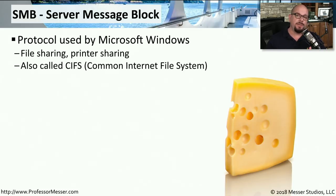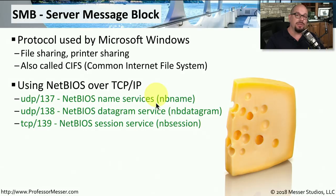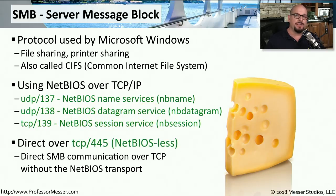Microsoft Windows doesn't use FTP to transfer files from one system to another. Instead, it uses its own format called Server Message Block. This is a standard set of protocols that Windows uses for file sharing and printer sharing. You might also see it referred to as CIFS, or Common Internet File System. Older Windows systems may use NetBIOS inside UDP or TCP packets — UDP port 137 for NetBIOS name services, UDP port 138 for the NetBIOS datagram service, and TCP port 139 for the NetBIOS session service. Modern Windows devices can communicate directly over TCP port 445 without needing to parse out these different NetBIOS protocols.